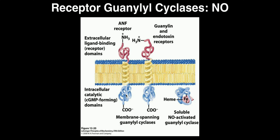That catalytic activity occurs on the cytoplasmic domain — that's our first kind of receptor guanylyl cyclase. The other kind is completely soluble and does not exist in the membrane. This is the class activated by nitric oxide, or NO. This type of guanylyl cyclase has a critical heme group — a large macrocyclic organic cofactor with an iron chelated in the center. Nitric oxide binds to this iron, causing the whole protein to change conformation, which activates the guanylyl cyclase activity.